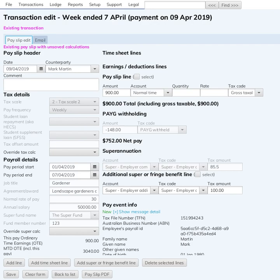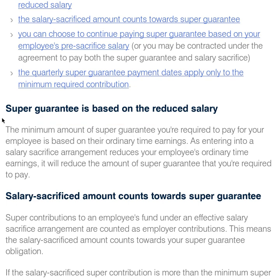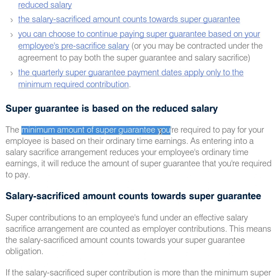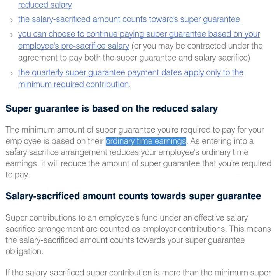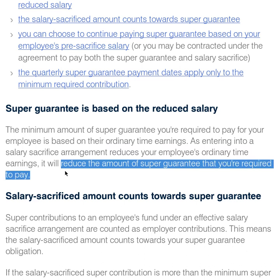This is a page on the ATO — I'll put the link in the description — about super salary sacrifice. It states: 'Super guarantee is based on the reduced salary, so the minimum amount of super you're required to pay is based on ordinary time earnings. A salary sacrifice arrangement reduces your employee's ordinary time earnings and will reduce the amount of super guarantee you're required to pay.'